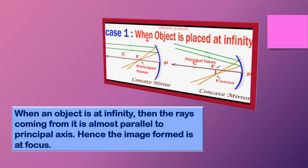The first condition is when the object is placed at infinity. When an object is at infinity, the rays coming from it are almost parallel to the principal axis. Hence the image formed is at the focus.